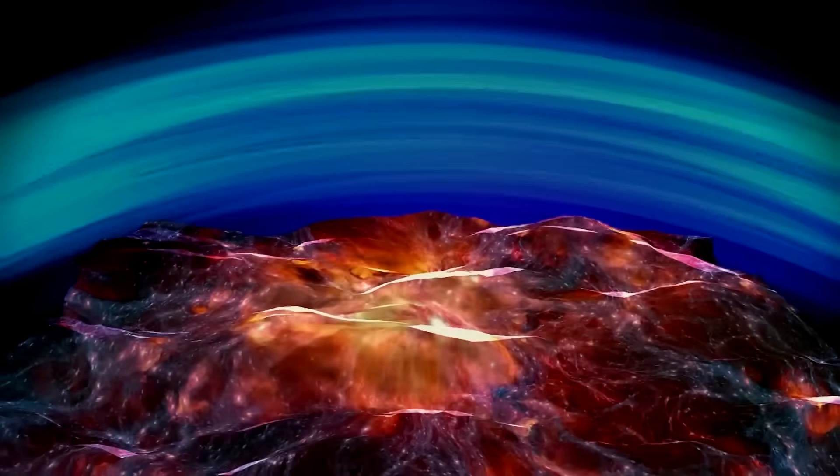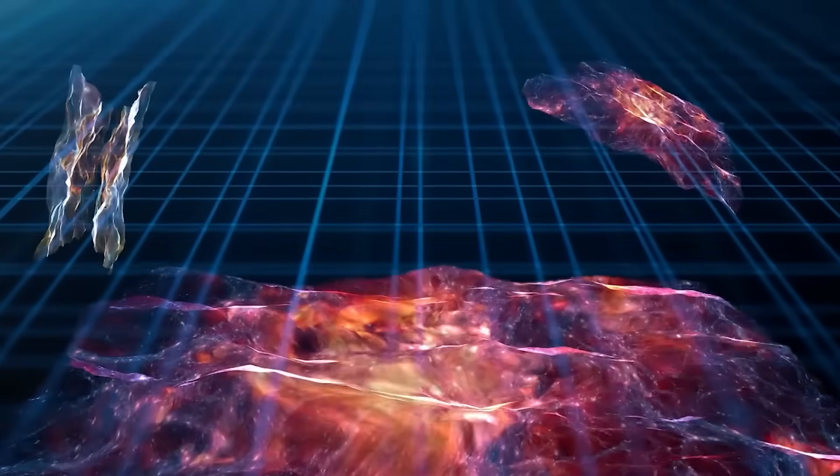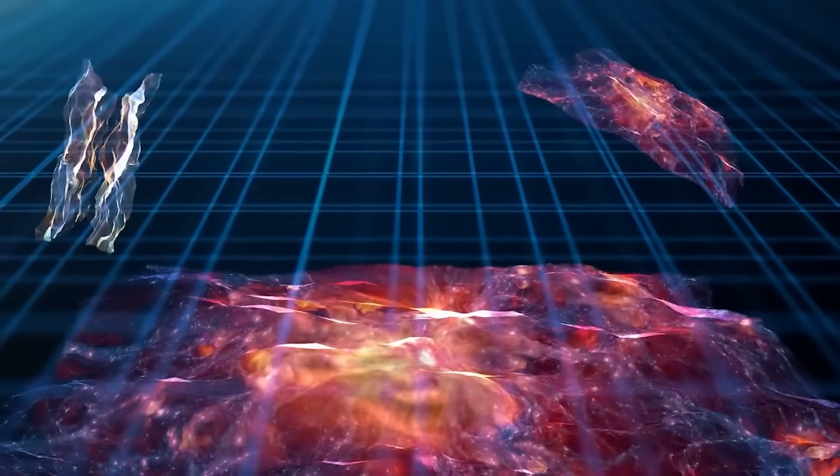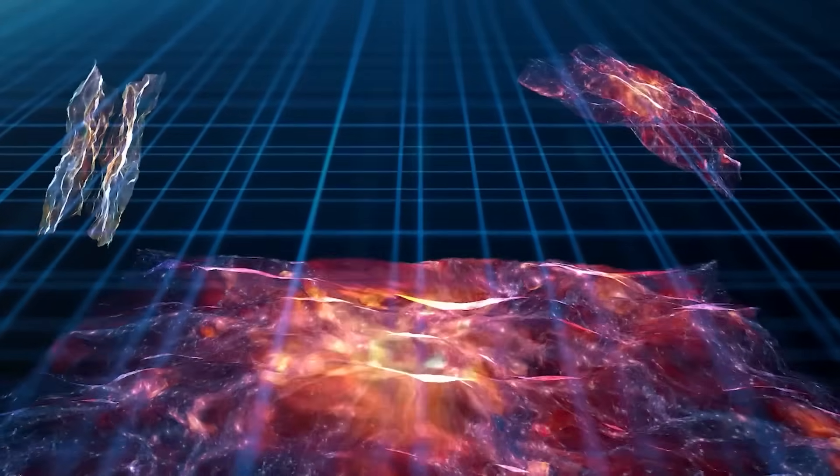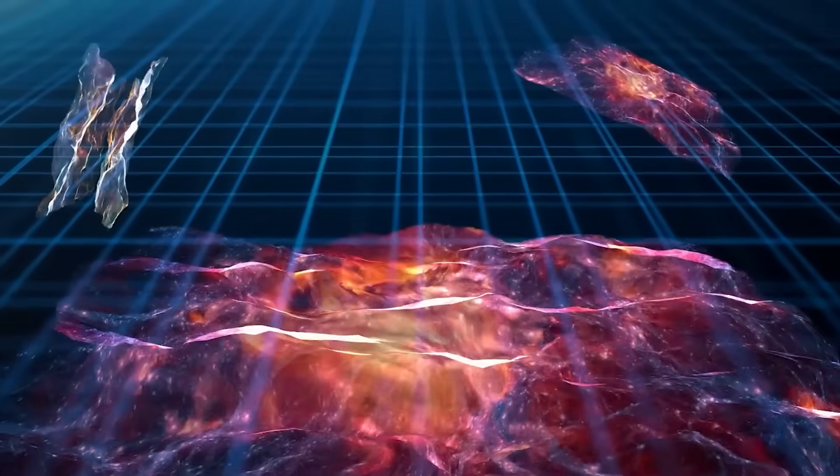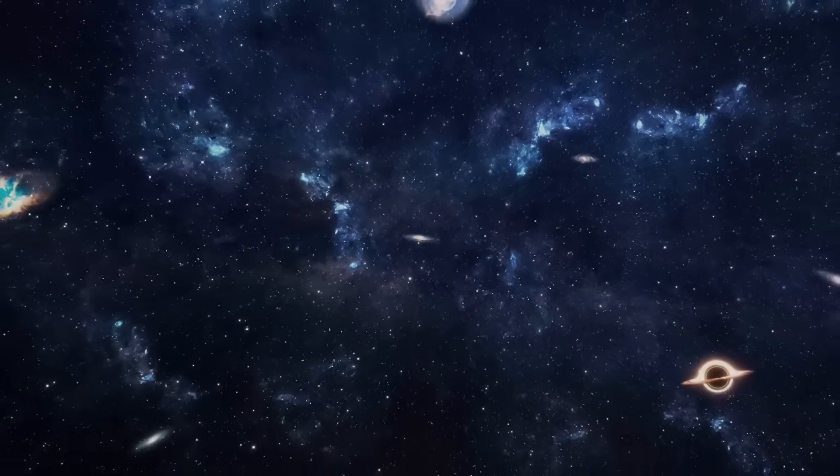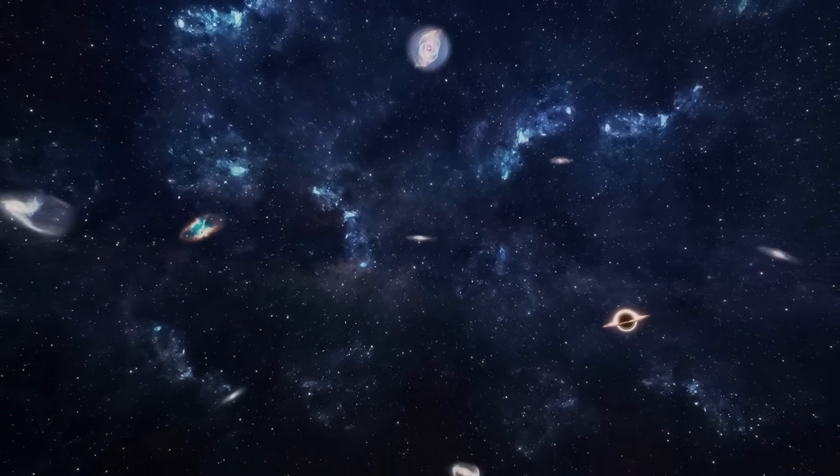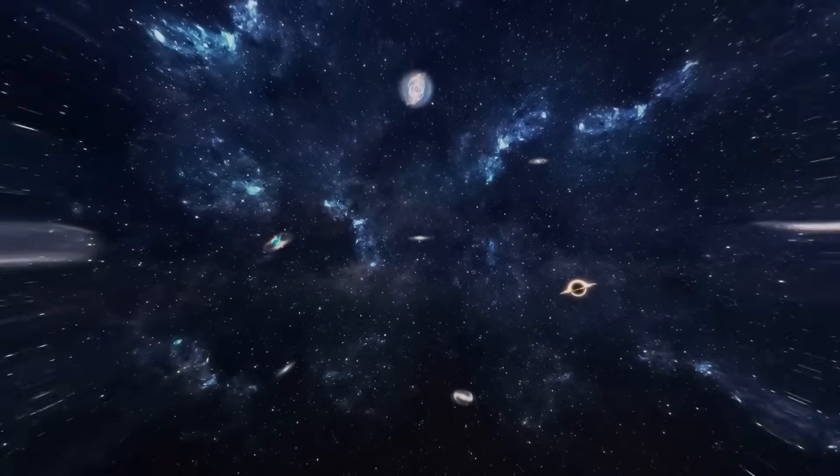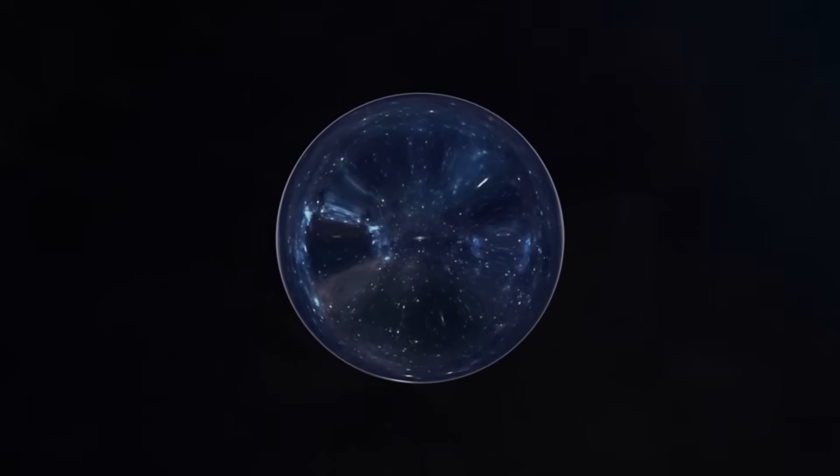Just as our brane is a distinct entity, other branes could harbor their own unique physical laws and dimensions. The interactions between these branes could lead to phenomena, such as gravity leaking into our universe from the bulk, providing a possible explanation for why gravity is weaker than the other fundamental forces. The brane world scenario has interesting implications for our understanding of cosmology and the origin of the universe. One hypothesis is that the Big Bang was the result of a collision between two branes in the bulk, causing a release of energy that led to the creation of our universe. In this view, the events that unfolded in our universe may be interconnected with the dynamics of other branes, leading to a richer understanding of cosmic evolution.